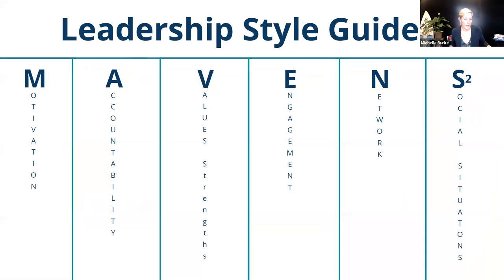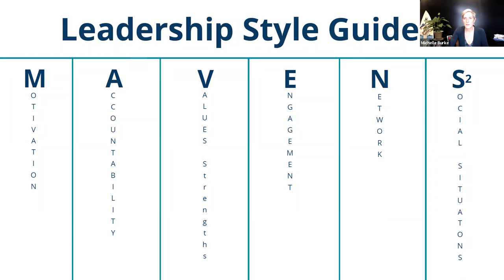So here's our leadership style guide. We're going to share this with you — we love acronyms. M stands for motivation. A stands for accountability. V stands for values and strengths. E stands for engagement. N stands for network — and not the technical one, it's the people one. And S stands for social power and situational leadership — S squared. So we're going to go through this now with a few of you. Here's how to define your leadership style.